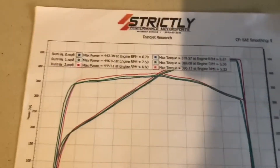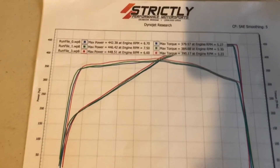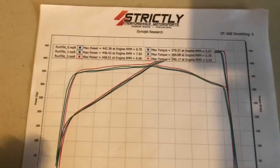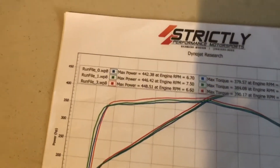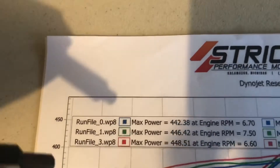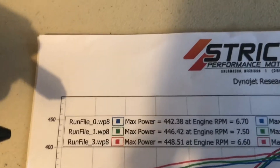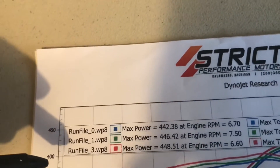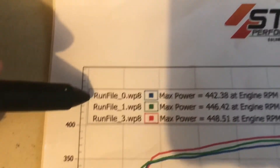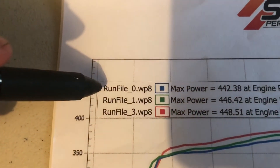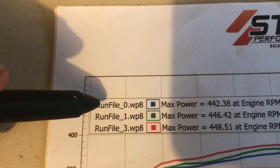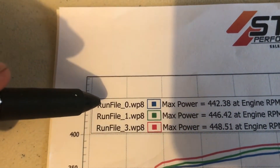This is a little difficult viewing through the phone, hopefully you can see it fine. I want to make note — this run file was the first run file, and you can see it's a WP8, which is Winpep 8, the latest software Dynojets are using.